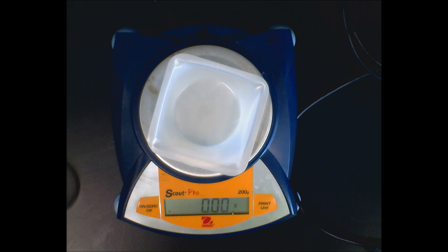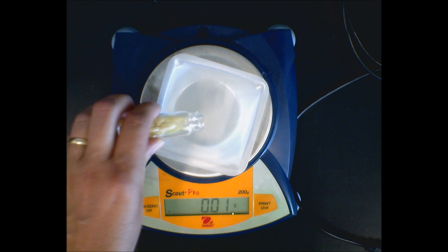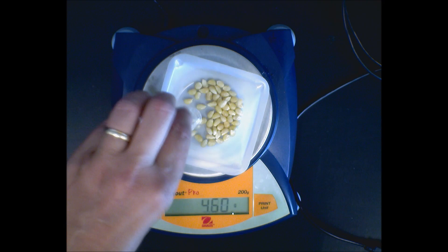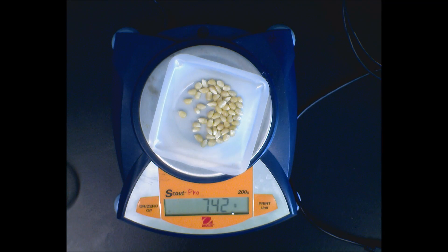So if I push that, you notice my mass goes to zero. And I can put whatever my substance is directly on there. And when it comes to a stop and a steady reading, 7.42 grams, that's how much substance I have - not how much substance plus the weighing boat.